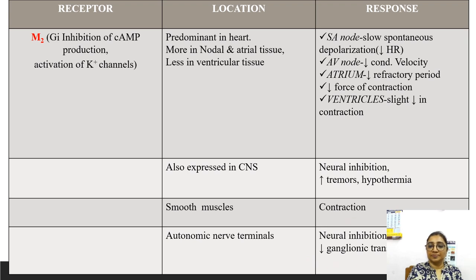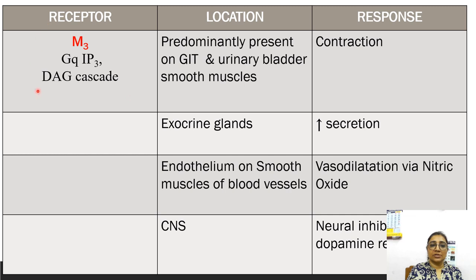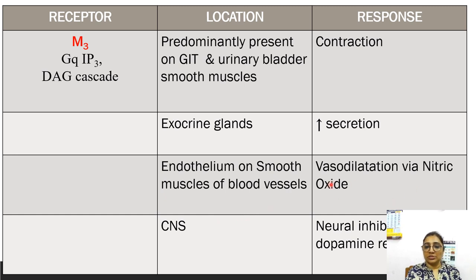M3 receptors are stimulatory, acting through the inositol triphosphate and diacylglycerol cascade. Location is predominantly the GIT and urinary bladder smooth muscle, causing contraction and increased GIT pressure and increased urinary flow. Exocrine glands show increased secretion. In endothelium and blood vessel smooth muscle, vasodilatation occurs via nitric oxide.